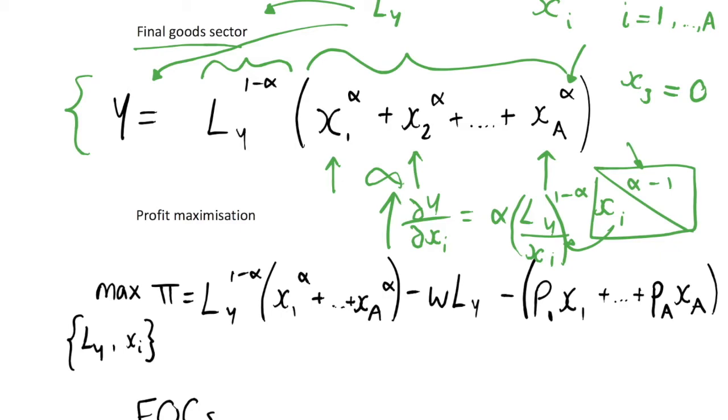So basically firms are going to want to use all the intermediate goods that they can get, and these intermediate goods are coming from the intermediate goods sector, and we're going to solve that problem in the next video of the intermediate goods sector, but in this problem we're just going to take this as given, and there's some supply of intermediate goods to the final goods sector.